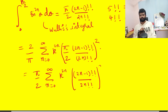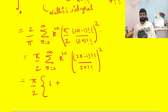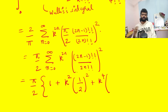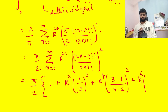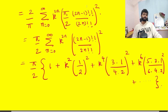Expanding term by term: n=0 gives 1; n=1 gives k² · (1/2)²; n=2 gives k⁴ · (1·3)/(2·4) whole squared; n=3 gives k⁶ · (1·3·5)/(2·4·6) whole squared; and so on. We see that this is exactly the result Ramanujan wrote on the board.